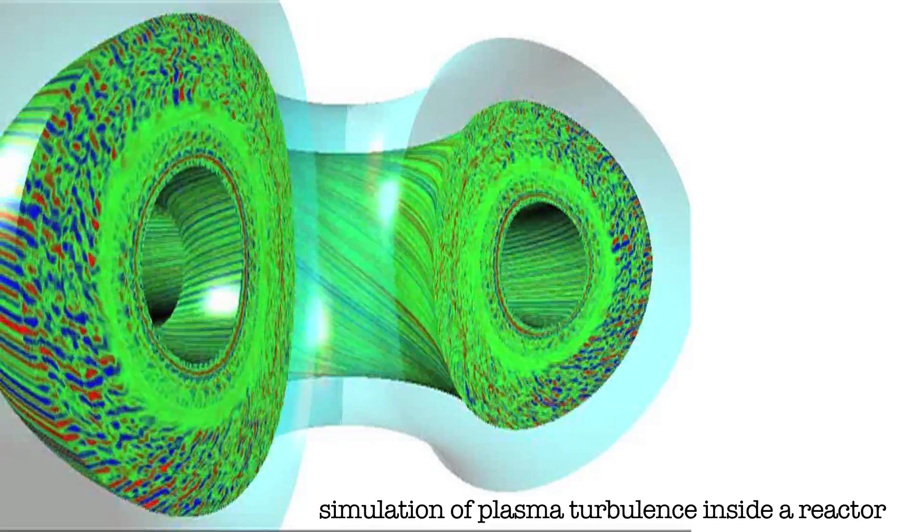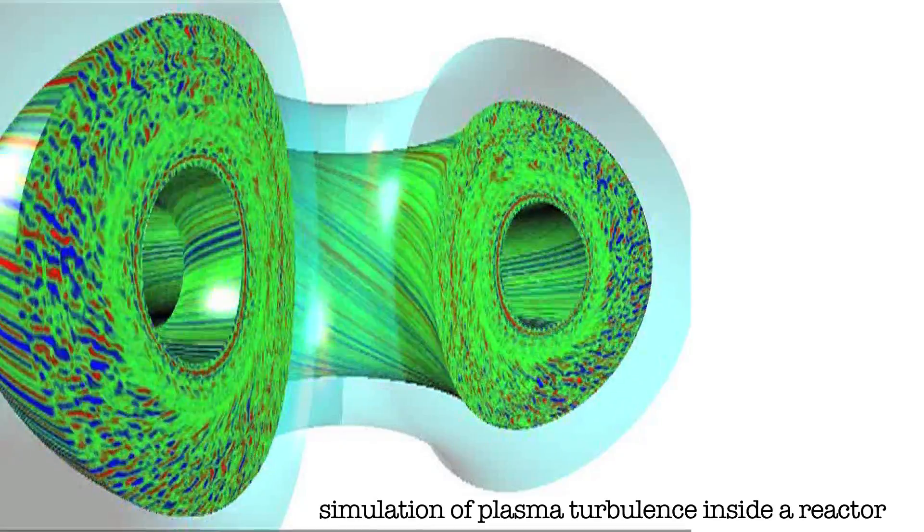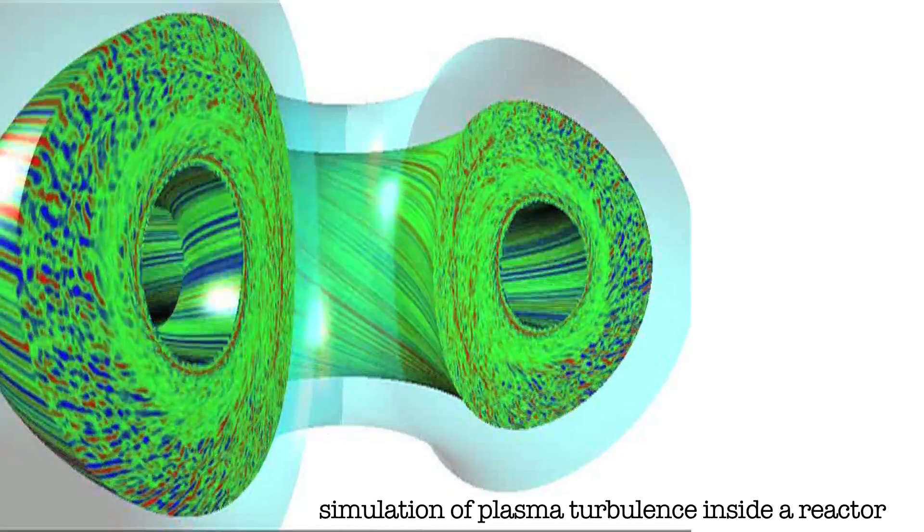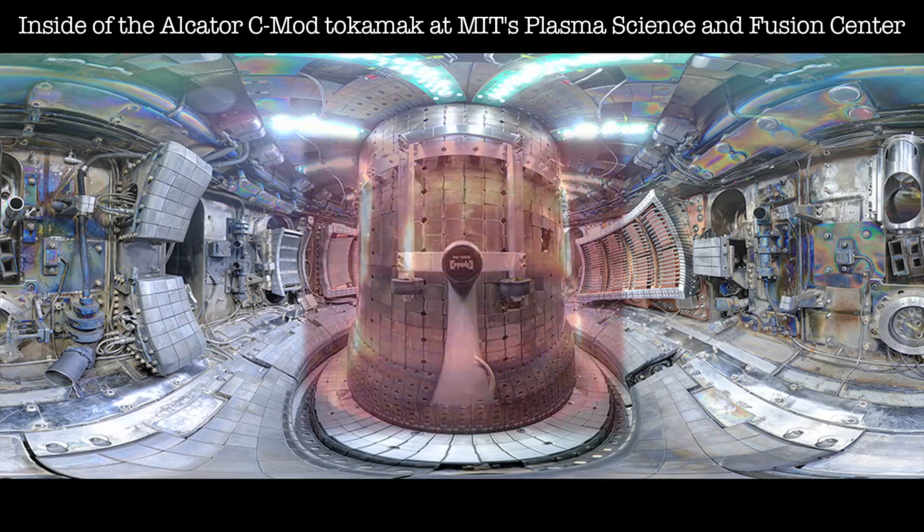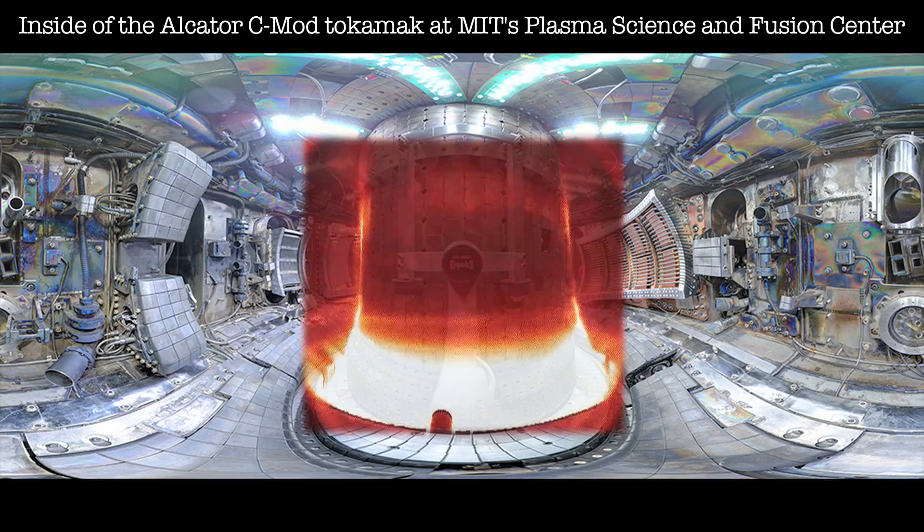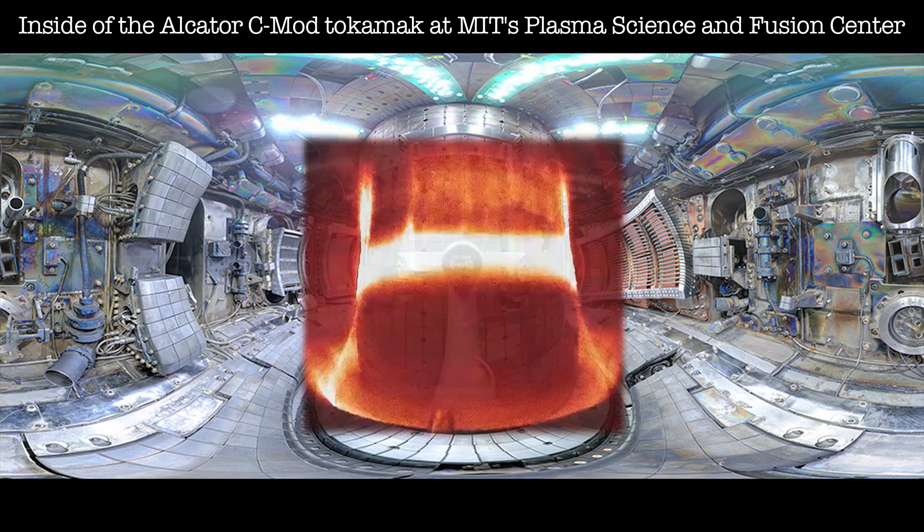However, understanding and being able to predict exactly how this turbulence happens and how to overcome it has been a major roadblock in fusion research until now. The results of experiments have so far failed to match the results predicted based on theory.